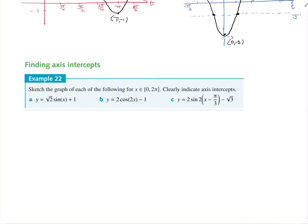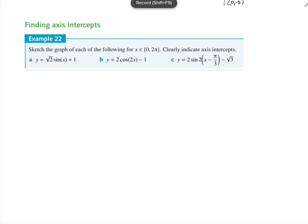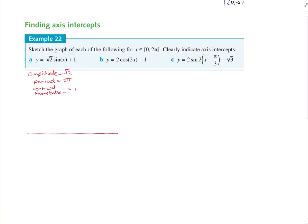That moves us down to the ones where we find some intercepts — they'll just take one more step. Let's do these ones with intercepts. Amplitude is equal to root 2. Period is 2 pi. No horizontal translation in this one. Vertical translation equals 1.